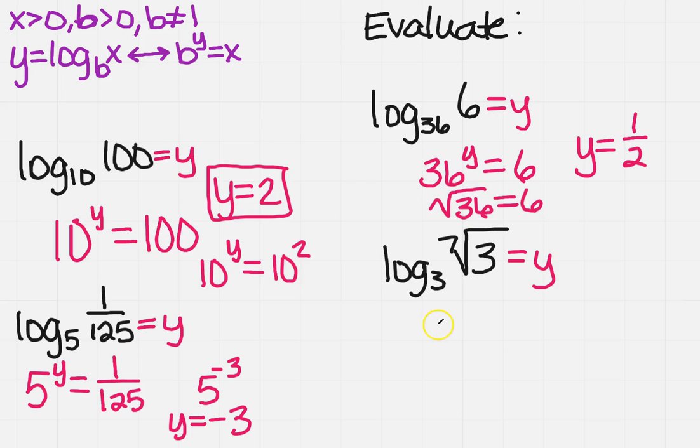Now this last one, it looks really gross, doesn't it? I've got 3 to the y equals the 7th root of 3. Okay, so that just looks kind of really scary. Well, I want to rewrite the right-hand side, so I've got 3 to the y equals, and this would be 3 to what power?